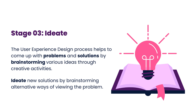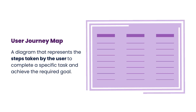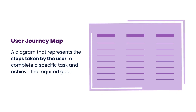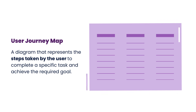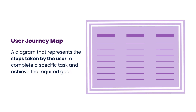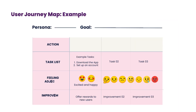Stage 3: Ideate. The user experience design process helps to come up with problems and solutions by brainstorming various ideas through creative activities. Ideate new solutions by brainstorming alternative ways of viewing the problem. A user journey map is a diagram that represents the steps taken by the user to complete a specific task and achieve the required goal. The key components of a user journey map are the user, goal, actions, emotions, and opportunities.